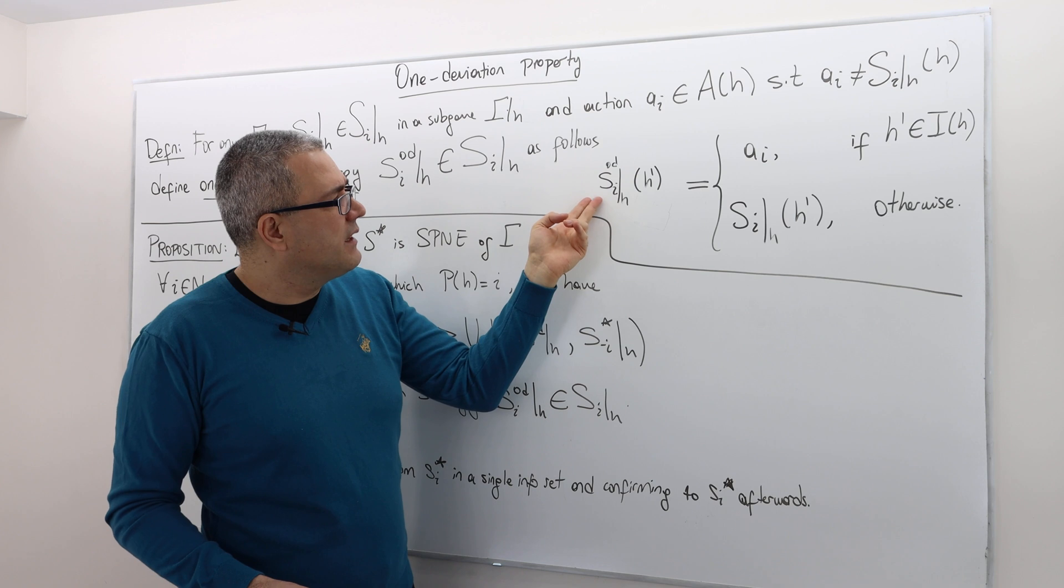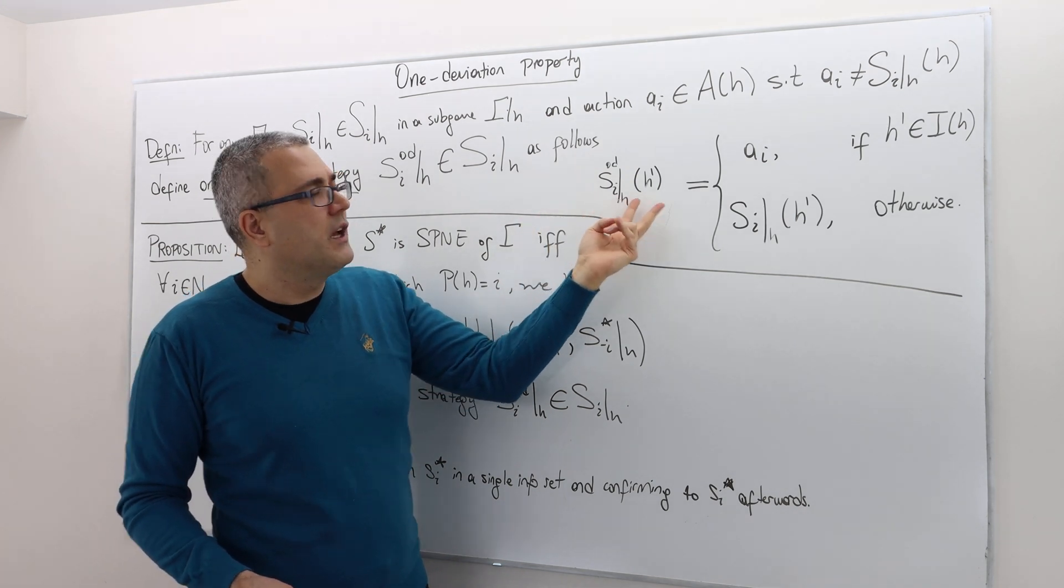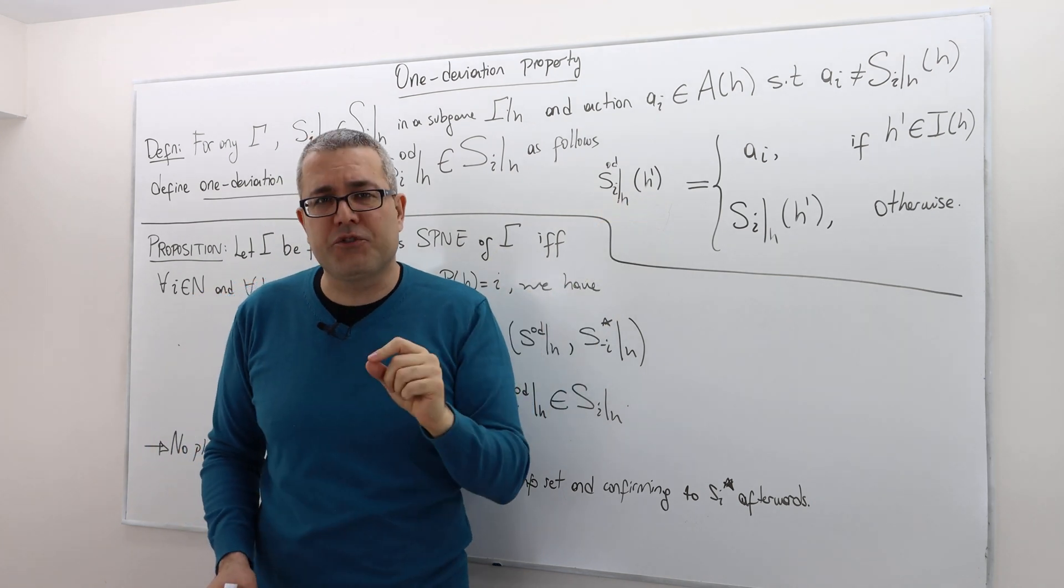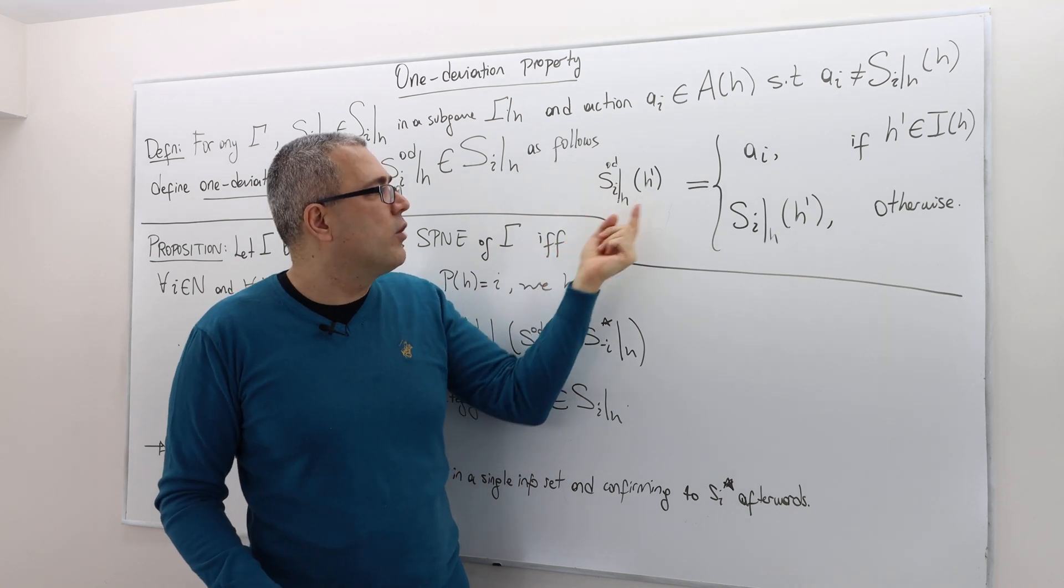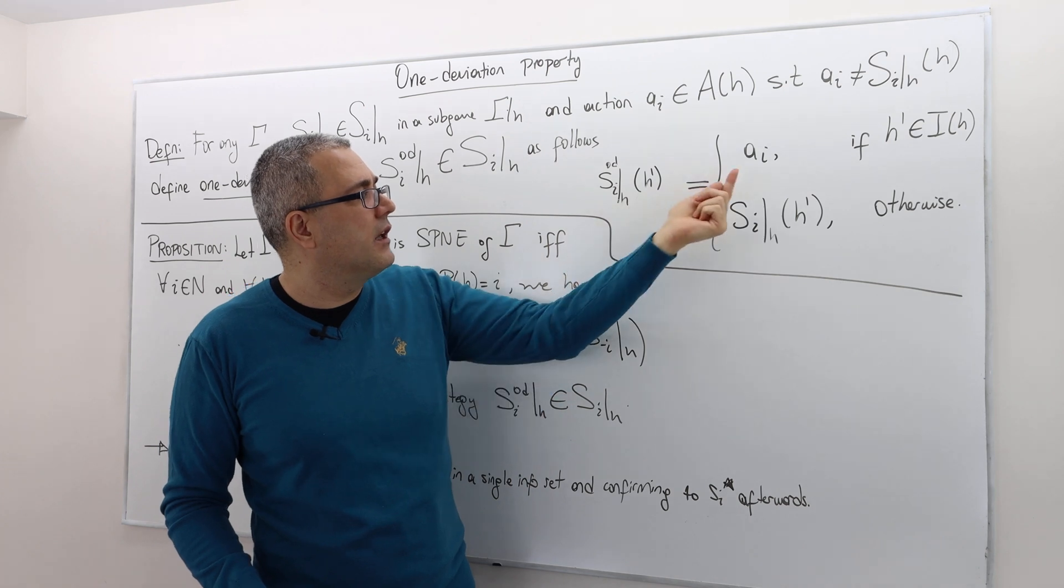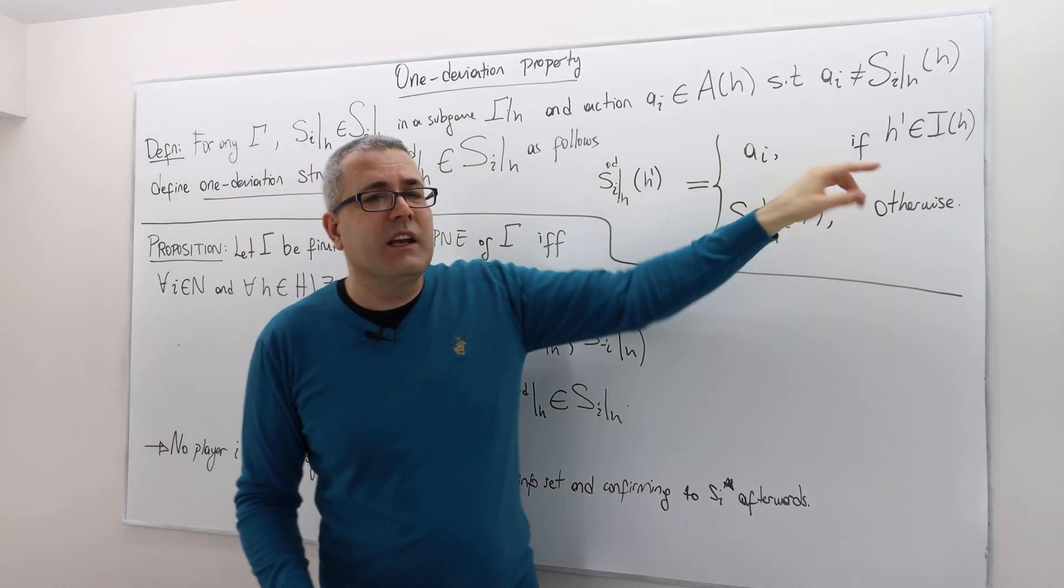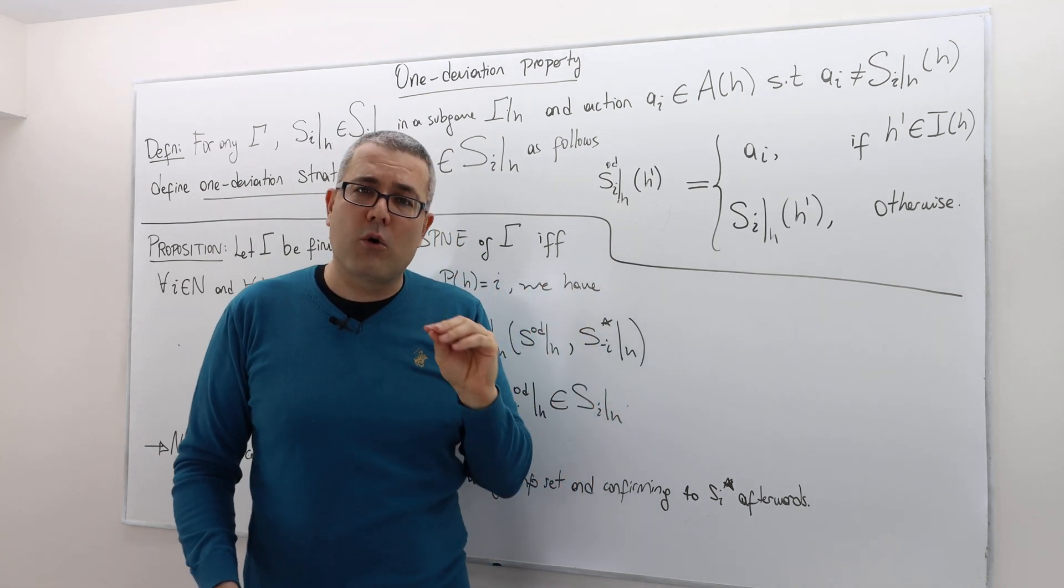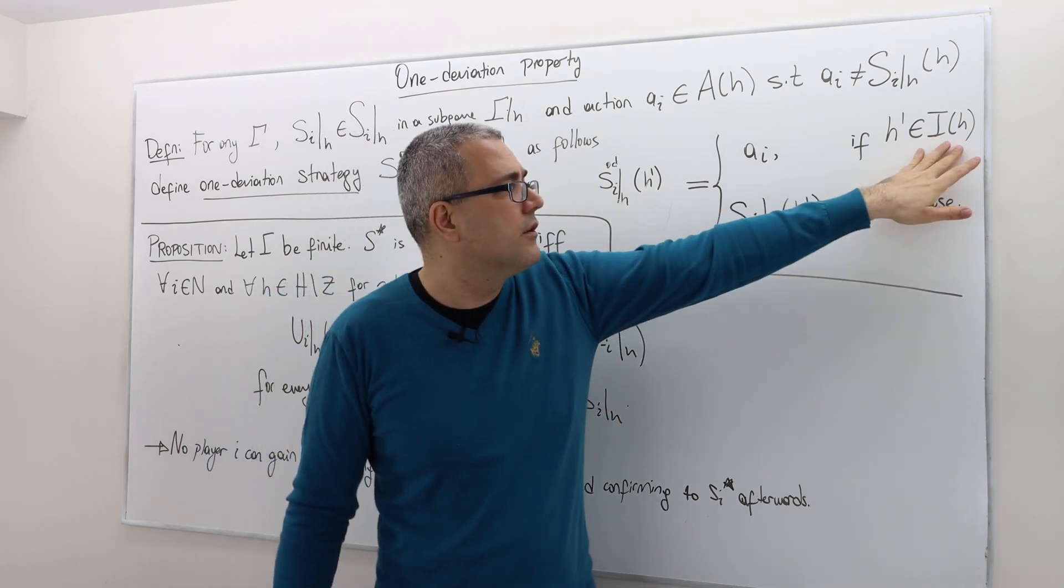So the one deviation strategy is going to tell us what action to choose after every non-terminal history H prime. This strategy tells player I to play AI if this history H prime is exactly the same as history H itself, or this H prime is the same information set with H.